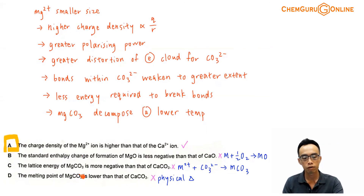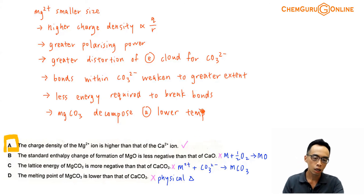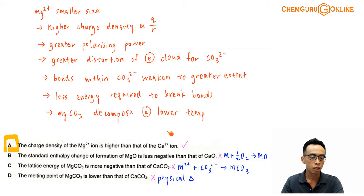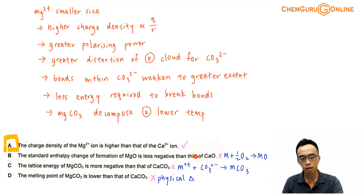For option D: the melting point of MgCO3 is lower than that of CaCO3. Melting point is more related to lattice energy and is a physical change. Since we are considering decomposition — where the metal carbonate breaks down to metal oxide plus CO2 — melting point, being a physical change, is not relevant here. So option D is not the answer. Running through all four options A, B, C, and D, the answer to this question is option A.